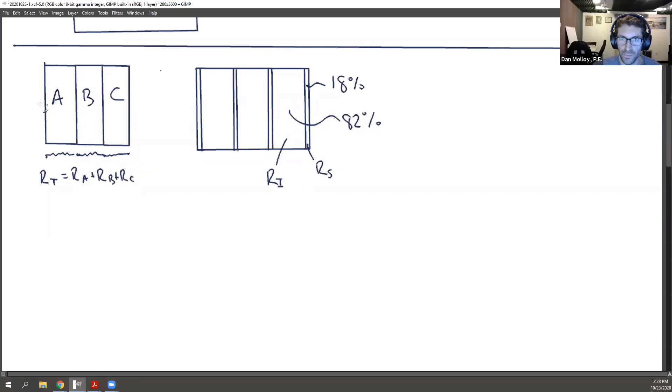Well, the heat doesn't go through them in order from A to B to C. It goes through one or the other. The heat can go through the studs or it can go through the insulated area.